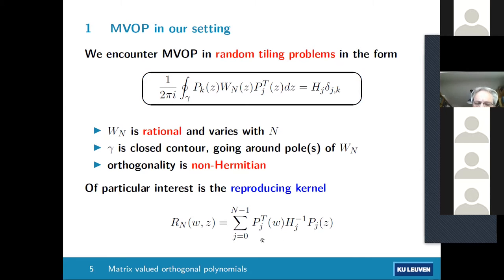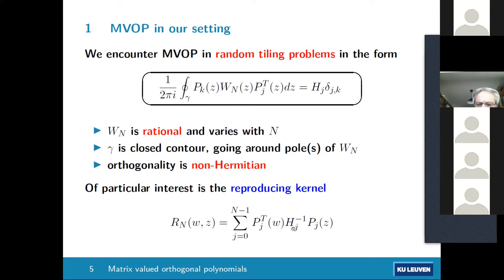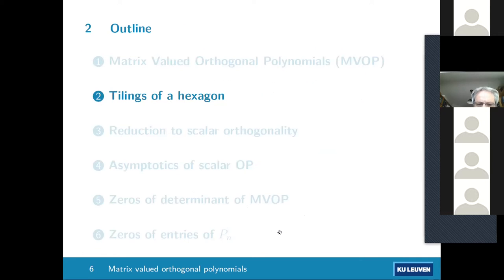What turns out to be of particular interest in these applications to tiling models is the so-called reproducing kernel — the main character in some sense — which is reminiscent of the Christoffel-Darboux kernel. Indeed, there is also a Christoffel-Darboux formula in this matrix valued setting.